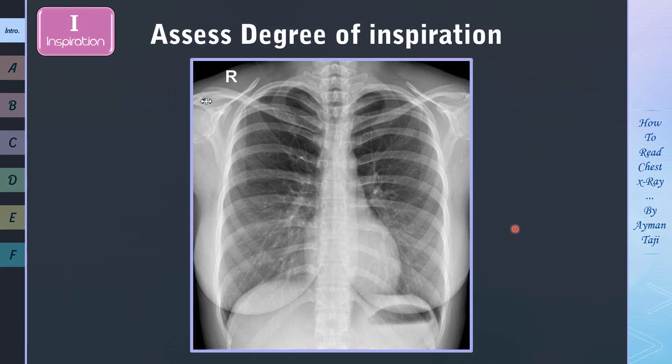To assess the degree of inspiration, simply just count the posterior ribs, and if a chest X-ray is obtained in optimum inspiration, you'll be able to count 8 to 10 ribs above the left hemidiaphragm. And by the way, the ribs that are seen the best are the posterior ribs.